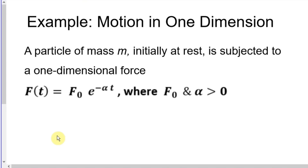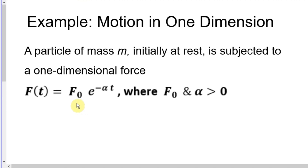Let's start by looking at the constants f₀ and α. What is the meaning of f₀? This is clear — it's the force at the starting point, at time equals zero. So f₀ represents the initial value of the force. The question says f₀ is positive, which means the force is always in the positive direction.